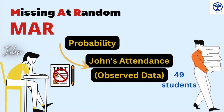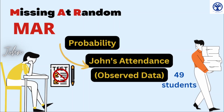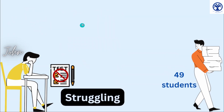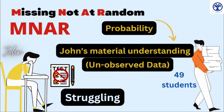If this is the case, then the data is missing at random — MAR. On the other hand, if the reason for John not giving the test is related to his struggling to understand the material or certain topics from which the test was taken, then we say this missing type is MNAR — missing not at random — because the probability here is dependent on the unobserved data, which is John's understanding of the material.